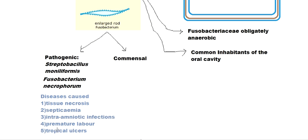These bacteria are also commensal. Commensalism is a category of relationship, like symbiosis and parasitism. In commensalism, one organism works with another without affecting the other — that is, without helping it or harming it. In symbiosis two organisms help each other, and in parasitism one organism harms the other.